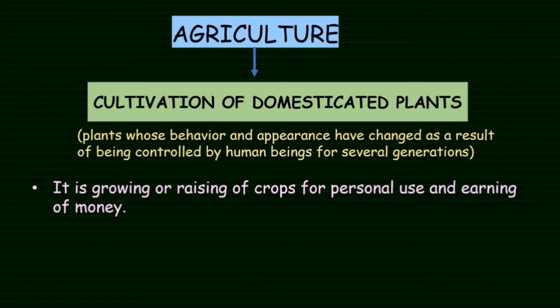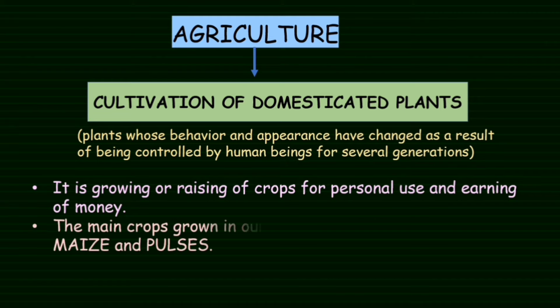It is the growing and raising of crops for personal use and earning of money. The main crops grown in our state are rice, wheat, maize, and pulses.